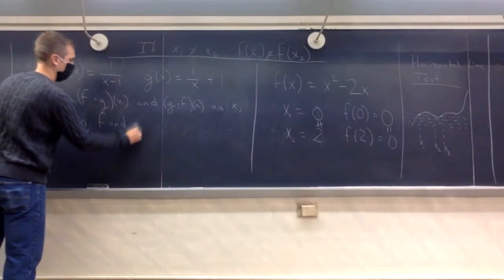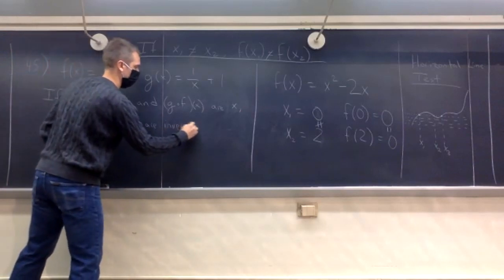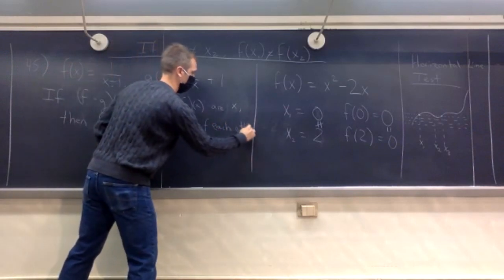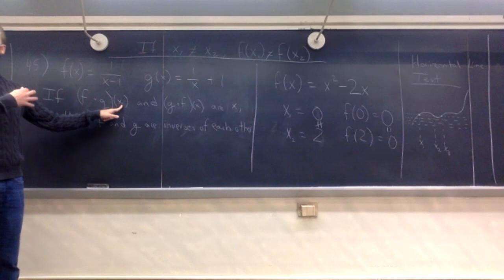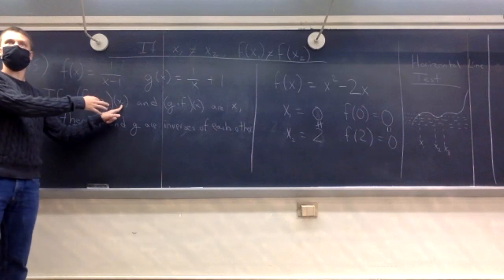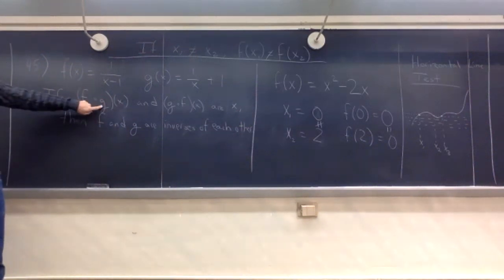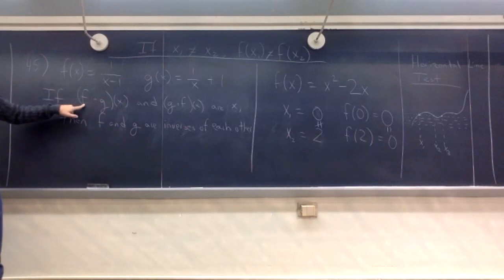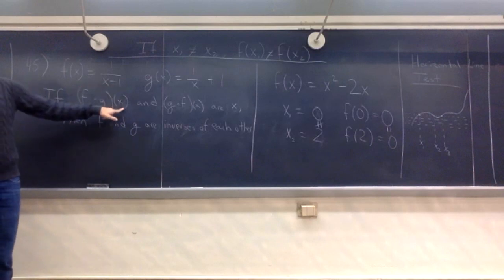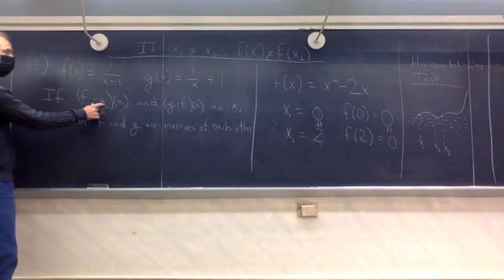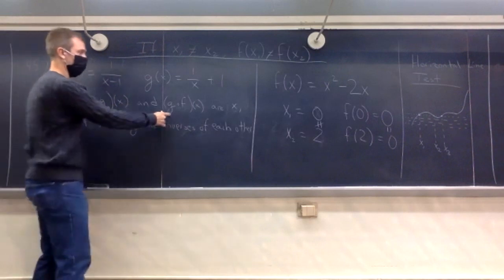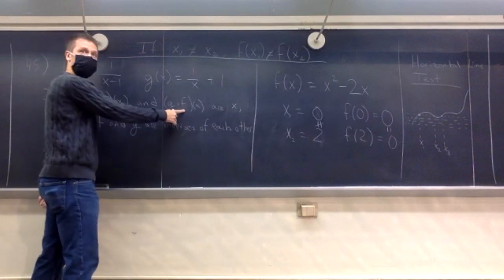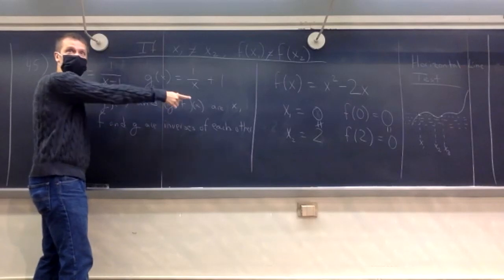What this is saying is: if you do this process first to your input and then do this process to that output, you get your original input back. So this function does something to x, and this one undoes it — you get x back out. In the other order: if we do f first and then g undoes it, they're inverses. Both directions must hold.